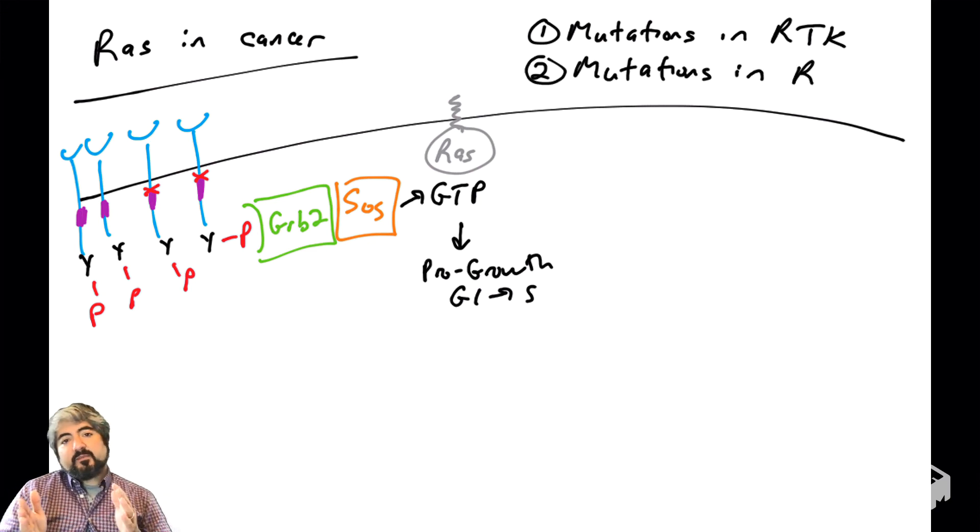The second category of mutations are mutations in RAS. The RAS gene could be mutated, giving you a defective RAS protein. It's a point mutation, but when you have mutations in proteins, those mutations could activate the protein or they can disable the protein. What do you think this mutation would do to the enzymatic activity of RAS?